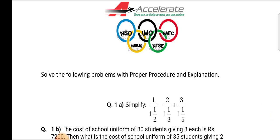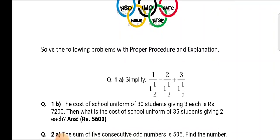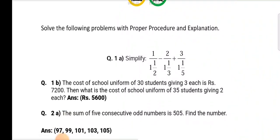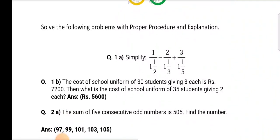Question number 1: Solve the following problems with proper procedure and explanation. Question 1a: Simplify 1 by 1 into half minus 2 by 1 into 1 third plus 2 by 3 by 1 into 1 by 5.